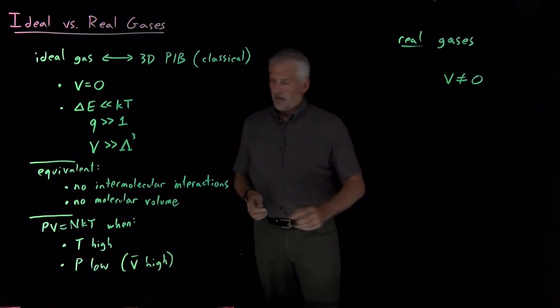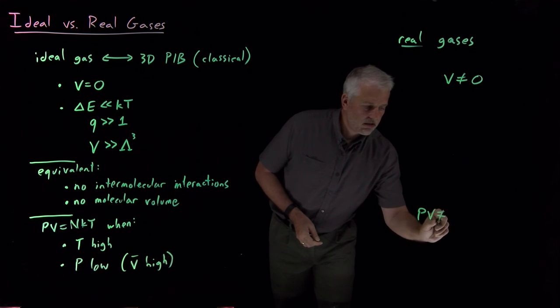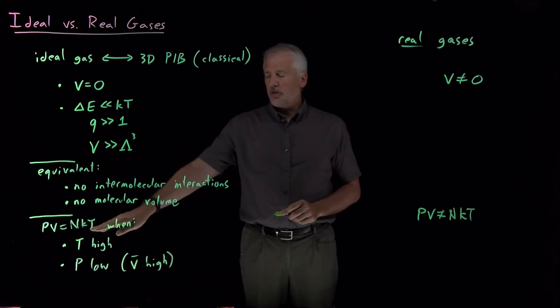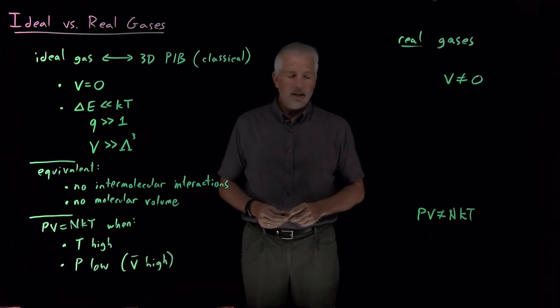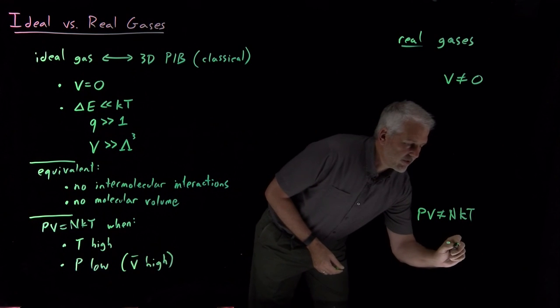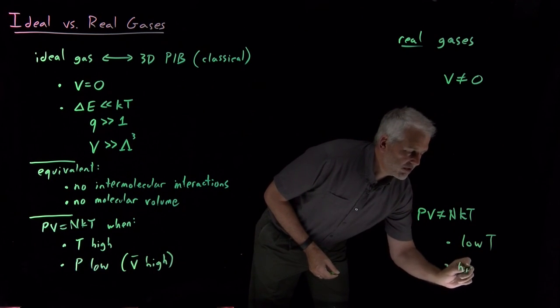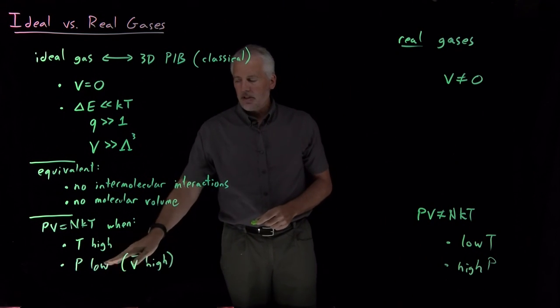Likewise, since we can't necessarily assume that the ideal gas law assumptions hold for real-world gases, if we go to low enough temperatures or high enough pressures, in other words, the opposite of these conditions, then instead of the ideal gas law being obeyed, we'll find that the pressure times volume is not exactly equal to nRT or nKT.